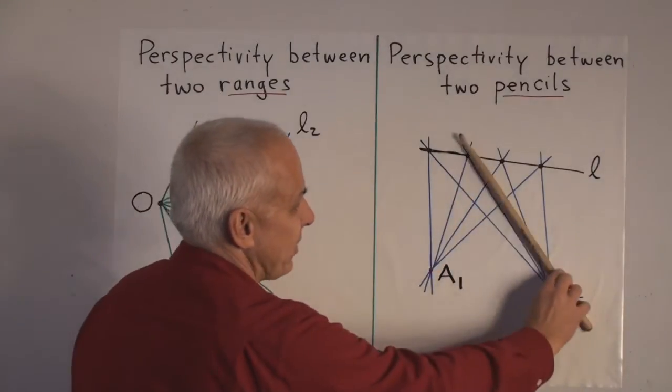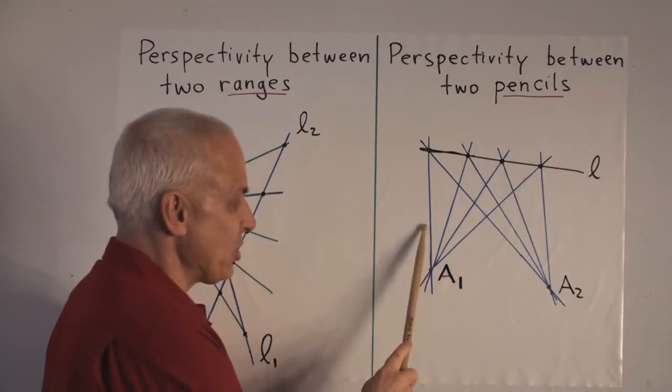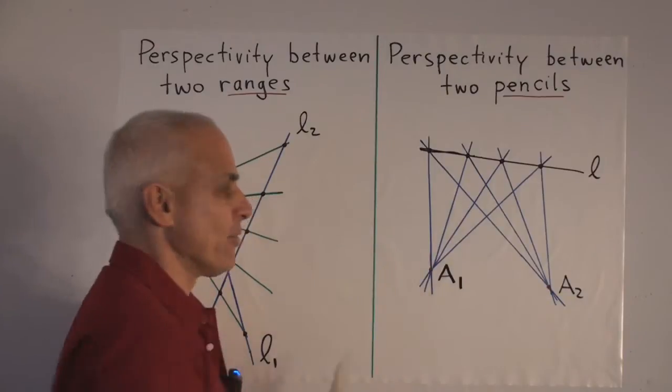This line is connected with this line. This line is connected with this one. This one with this one. We get an association between all the lines through A1 and all the lines through A2.